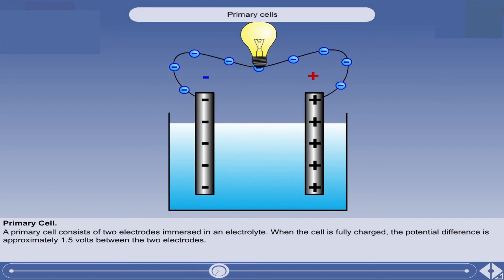When the positive and negative terminals of the electrodes are connected to an external circuit, electrons flow from the negative terminal to the positive terminal through the circuit.